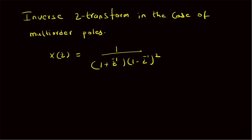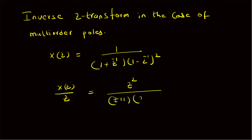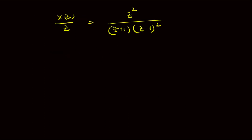To make the rational polynomial a function of positive powers of z, we write X(z)/z. Multiplying both numerator and denominator by z³, we get z² in the numerator, and in the denominator we have (z + 1)(z - 1)². That is the rational polynomial structure in positive powers of z. The poles are at z = -1 and two poles at z = +1.